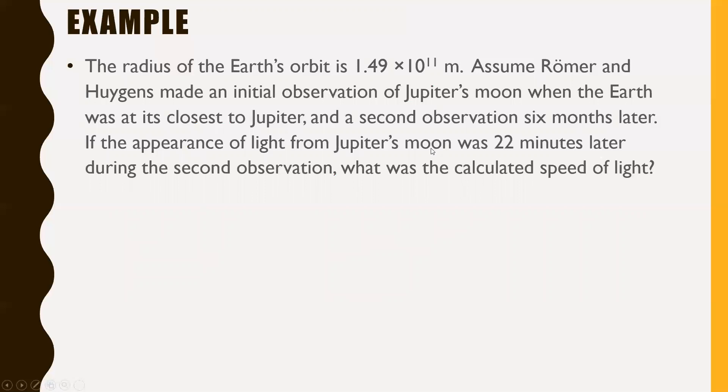Moving on. So the radius of the Earth's orbit is 1.49 times 10^11 meters. Assume Römer and Huygens made an initial observation of Jupiter's moon when the Earth was at its closest to Jupiter, and a second observation six months later, which of course would be when Earth is at its furthest from Jupiter. Well, it's a little bit of a simplification, but we'll just pretend. Now, if the appearance of light from Jupiter's moon was 22 minutes later during the second observation, what was the calculated speed of light? This one's a lot tougher. If you want to pause and give it a try, go for it. But here's where we're going to go with this.